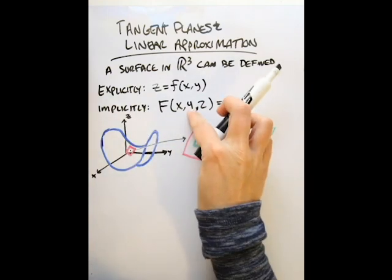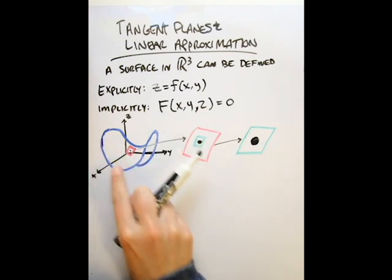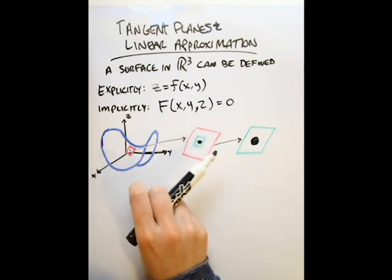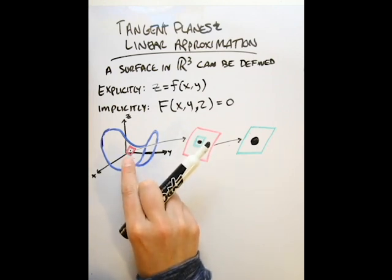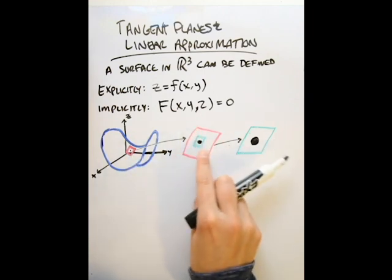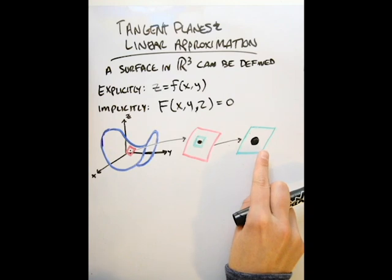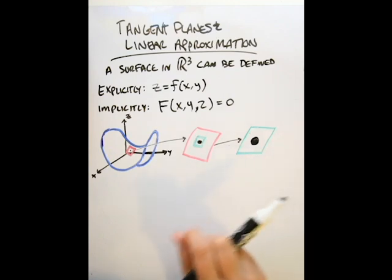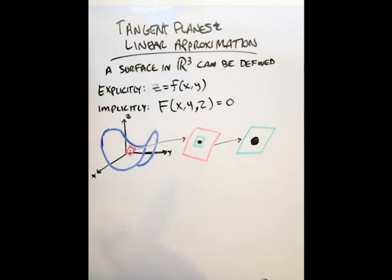The idea behind a tangent plane comes from this: if you look at this saddle-like surface, we have a smooth surface, and if we pick a point and start to zoom in to that point on our surface, the more and more we zoom, the surface actually starts to appear as a plane. So we'll define the equation of a tangent plane in our two forms depending on the way our surface was defined.